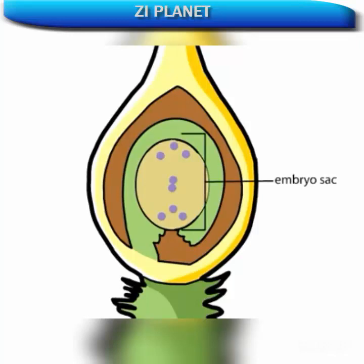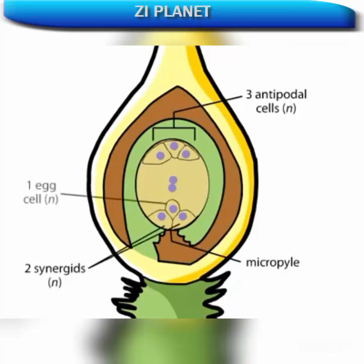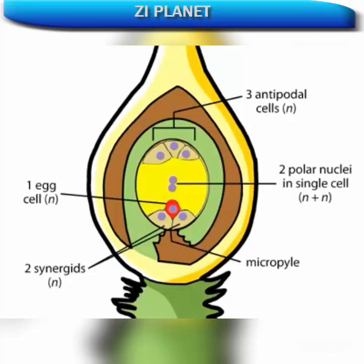Within the embryo sac, cell walls form between most of the nuclei. Three cells called antipodal cells form opposite the micropyle opening of the ovule. Three also form near the micropyle: two are called synergids and the other is the egg. Finally, two nuclei called polar nuclei remain together in one large central cell. The egg cell and the single cell with two polar nuclei will eventually take part in a double fertilization event.